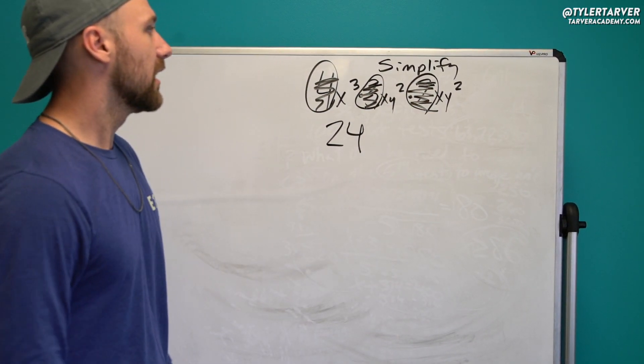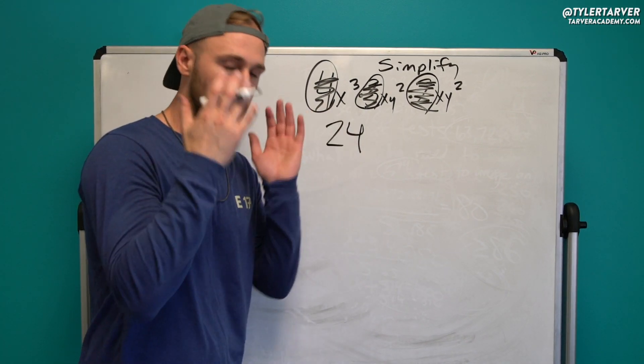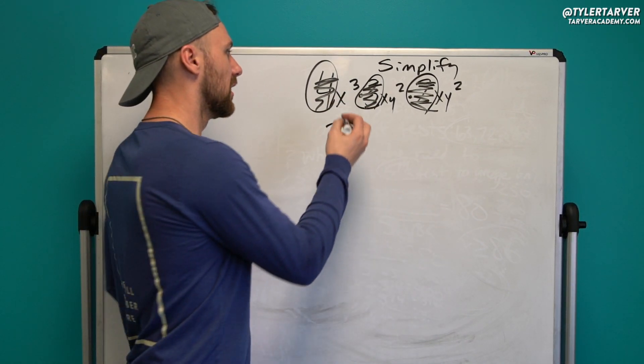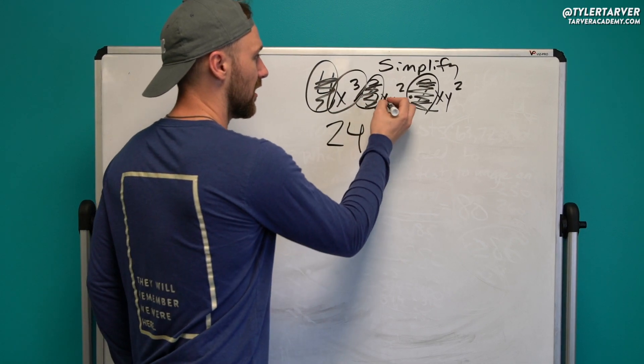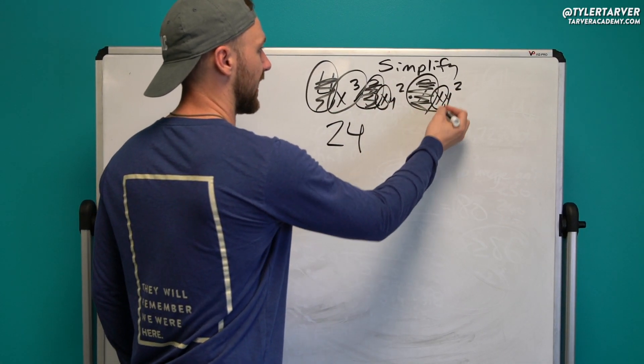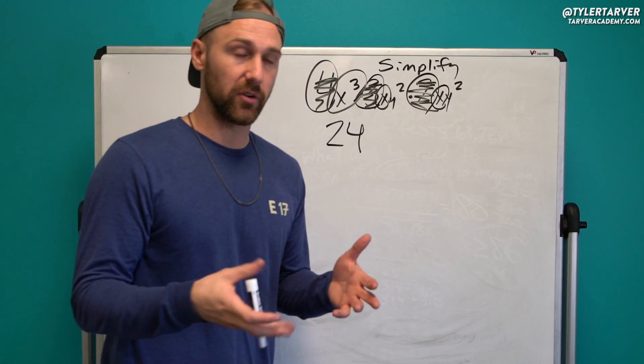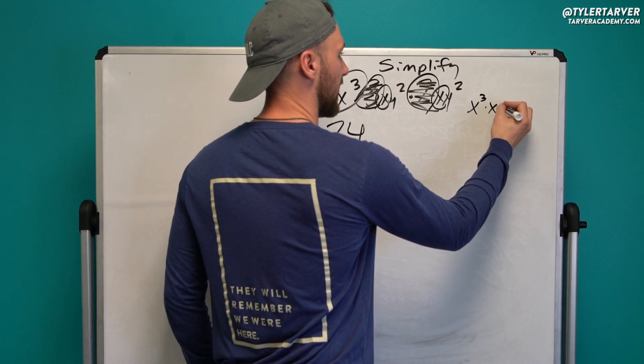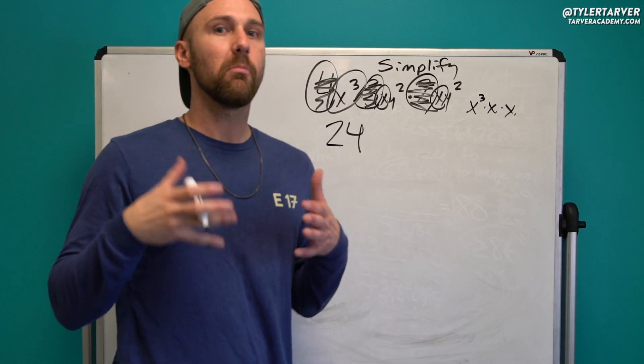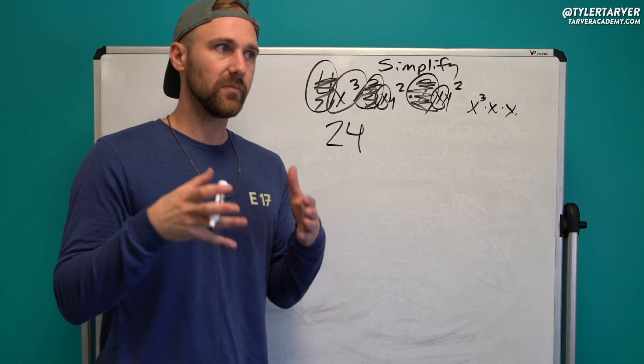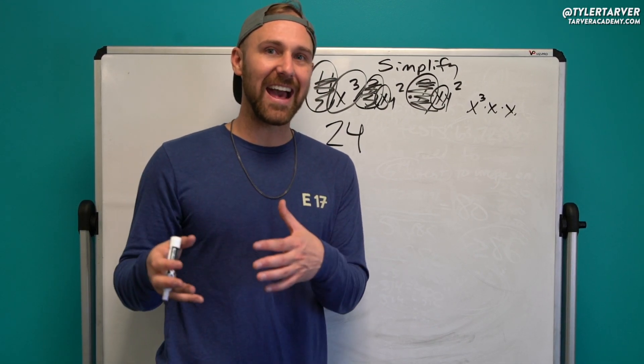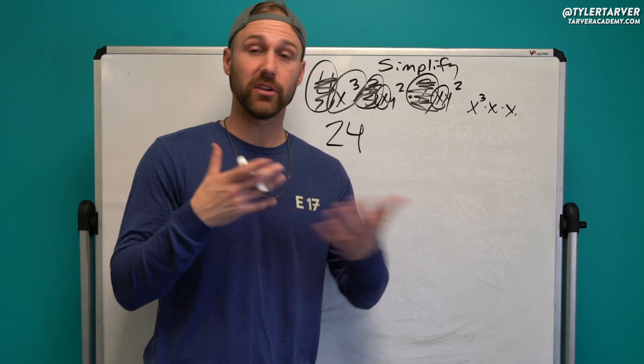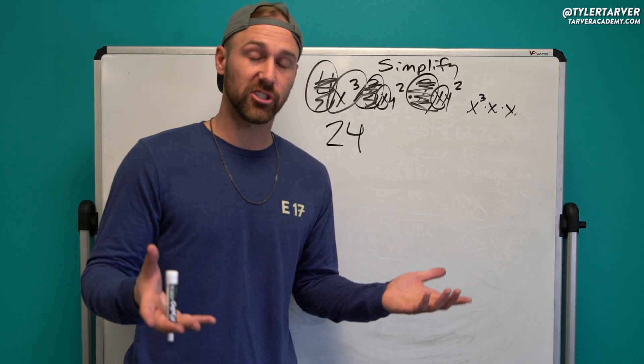Now I'm gonna mark those out because I don't want to reuse them. Now I'm gonna go to my x's, I'm just multiplying everything that's similar. So I've got x to the third, just x, and then just x. Now when you multiply exponents, all you're doing is adding the exponents. And when you divide them, you subtract.